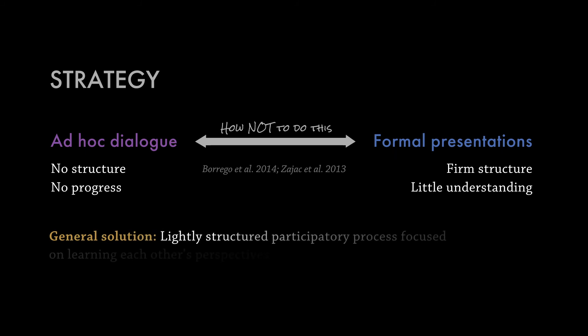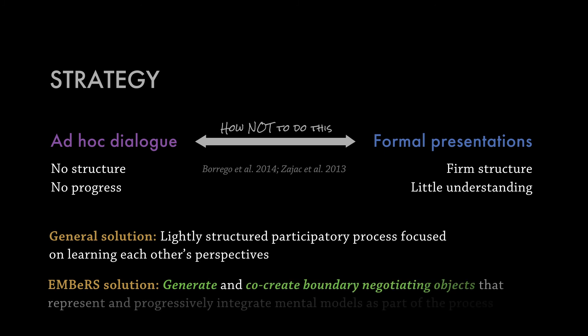We think the way forward is to do something in the middle: a lightly structured participatory process, focused on learning each other's perspectives. You don't go in immediately saying 'what's our research going to be together' — you approach it by asking how we can put a process in place so we can really learn from each other. The Embers solution adds to this by incorporating the generation and co-creation of boundary negotiating objects to represent and progressively integrate mental models.